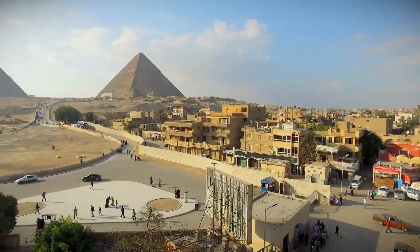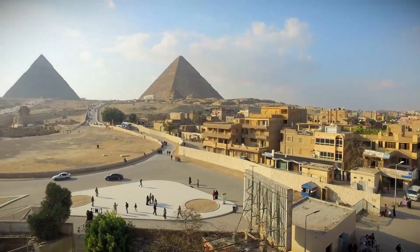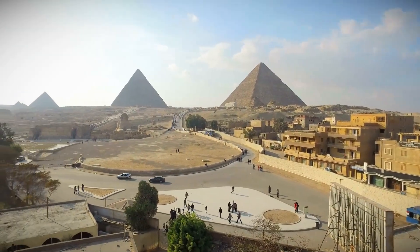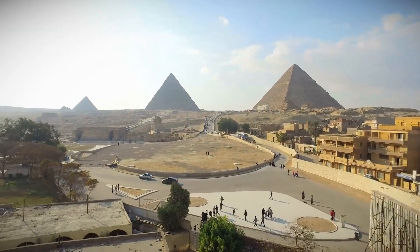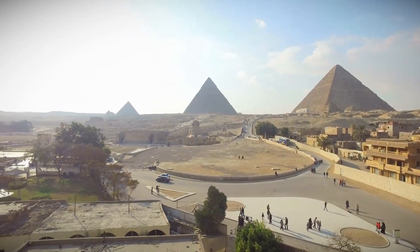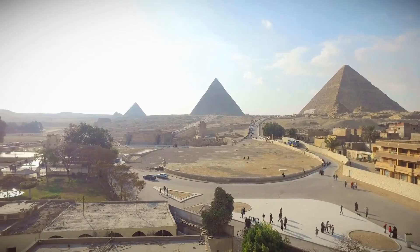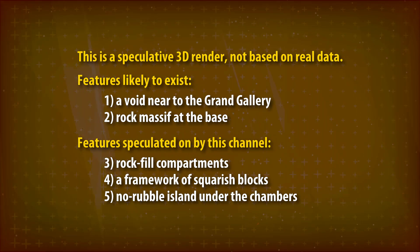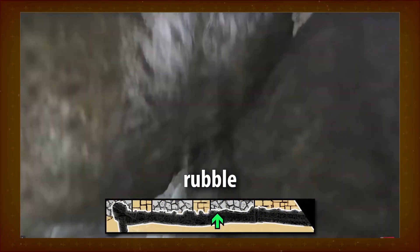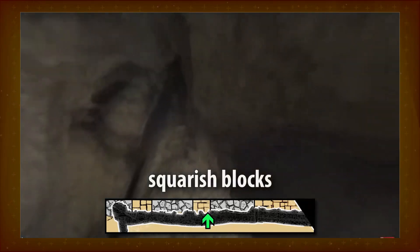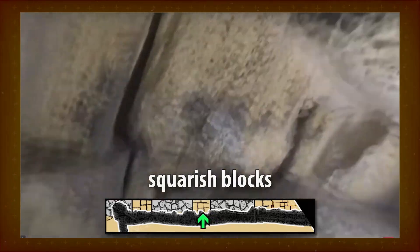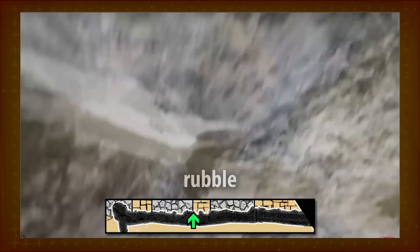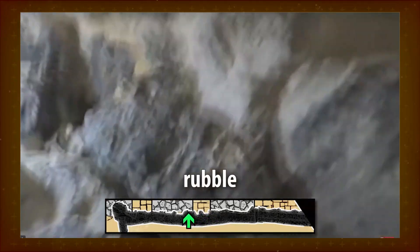This is just a short video with a 3D visualization and a few comments. It simply documents this channel's current view of the Great Pyramid's masonry structure. The 3D render is made to look like a CT scan, but many of the shown features are speculative. The size and spacing of the rock fill pockets that may exist in the pyramid are based on the ceiling of Al-Mamun's tunnel shown in our previous video.